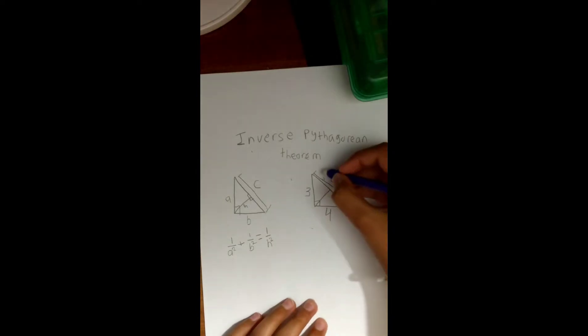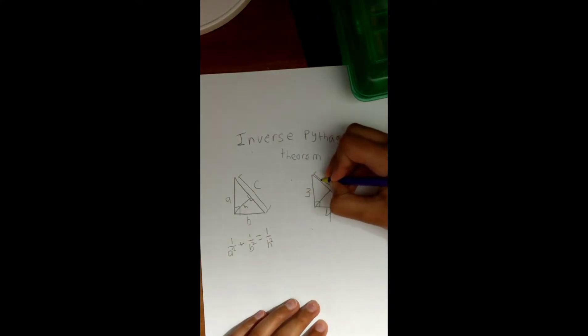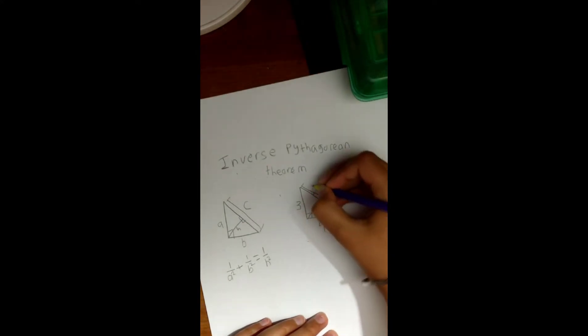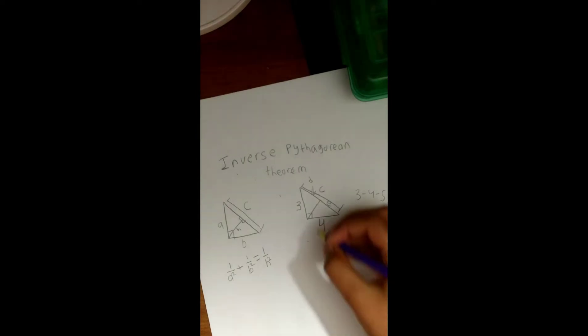So this side length is d and that side length is e. Because of the Pythagorean theorem we know this has to be a 3-4-5 triangle, which means c has to equal 5 according to the Pythagorean theorem. So let's see how we can use this information and the inverse Pythagorean theorem to actually prove the inverse Pythagorean theorem.